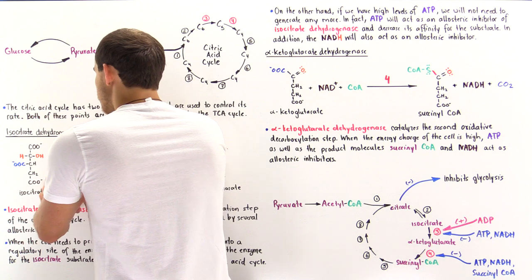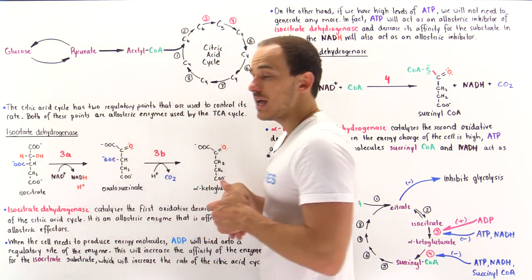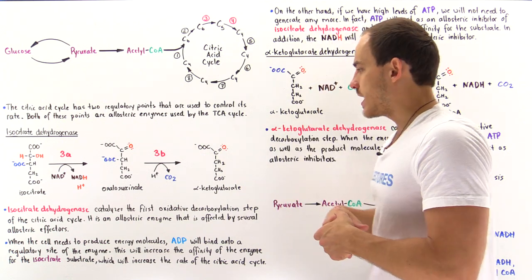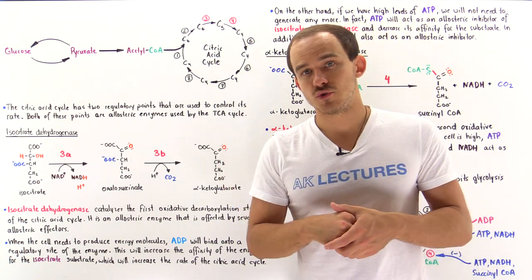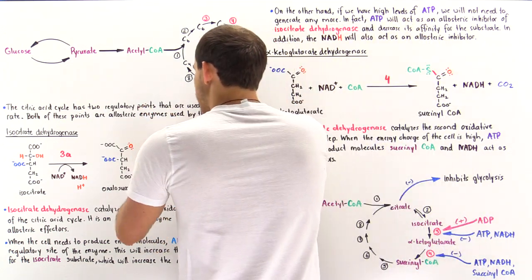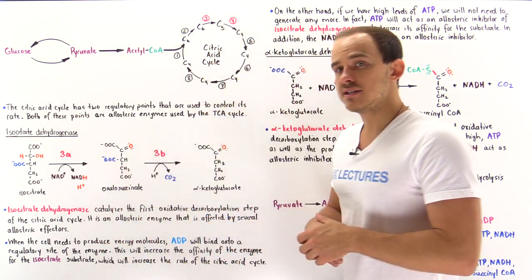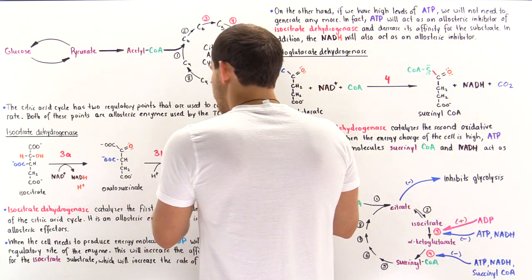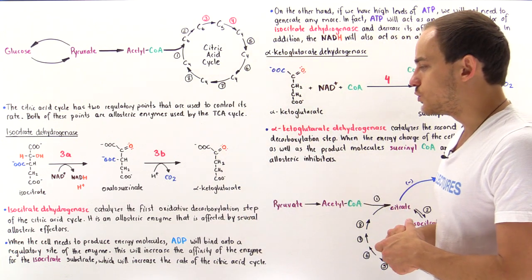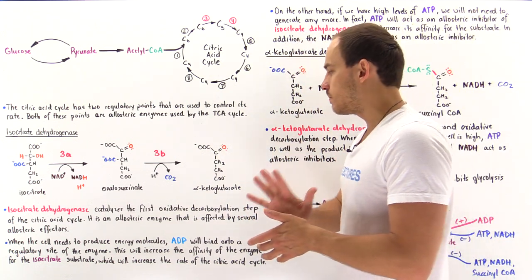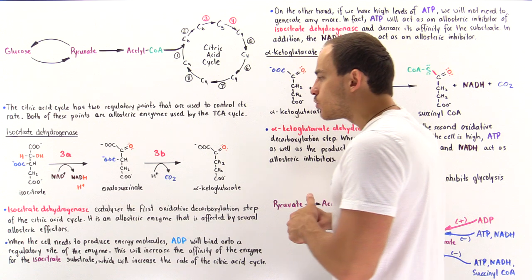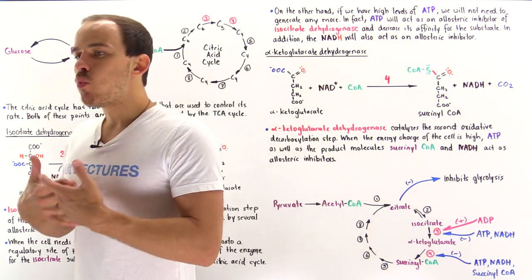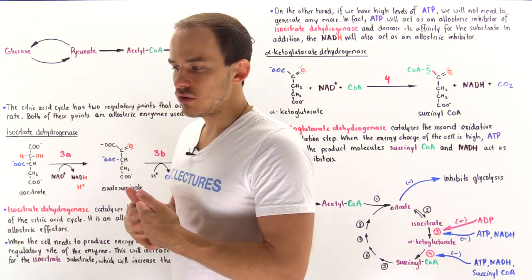In step 3A, we reduce the NAD+ coenzyme into NADH, and the NADH can then be used by the electron transport chain, as we'll discuss in a future lecture. In step 3B, the oxalosuccinate undergoes a decarboxylation step in which we release a carbon dioxide and produce a five-carbon molecule, alpha-ketoglutarate. Now let's imagine inside our cell we want to produce ATP molecules.